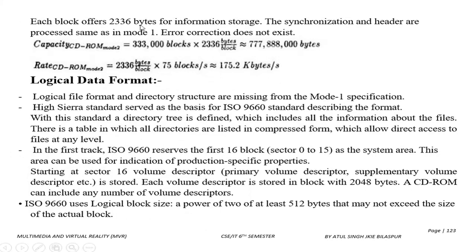In Mode 1, user data was 2048 bytes; in Mode 2, user data is 2336 bytes. Each block offers 2336 bytes for information storage. Synchronization and header are processed the same as in Mode 1. Since there is no error correction, we can directly multiply to get the capacity: 2336 multiplied by blocks per second gives the byte count. The rate, multiplied by 75 blocks per second, gives the kilobytes per second rate.